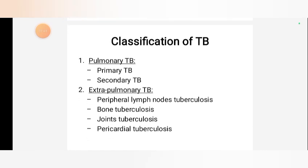Classification of tuberculosis: pulmonary tuberculosis and extra-pulmonary tuberculosis. Pulmonary tuberculosis has two types — primary and secondary tuberculosis. Extra-pulmonary tuberculosis includes peripheral lymph node tuberculosis, bone tuberculosis, joint tuberculosis, and pericardial tuberculosis.